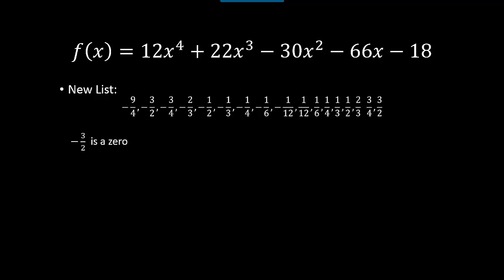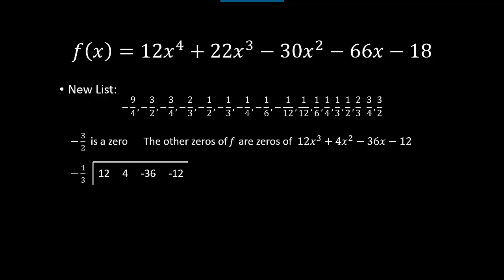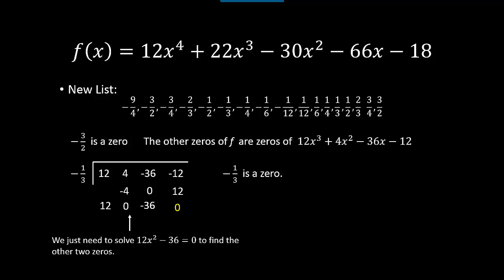Taking the coefficients from the quotient polynomial, I'll try −1/3. Synthetic division gives a remainder of 0 — negative one-third is our second zero. Every time you find a zero, the degree of the quotient polynomial reduces. Now all that's left is 12x² − 36, and the other two zeros must come from this quadratic.